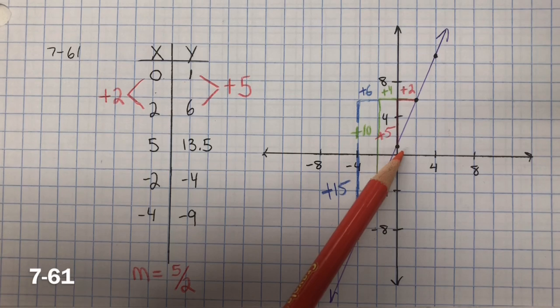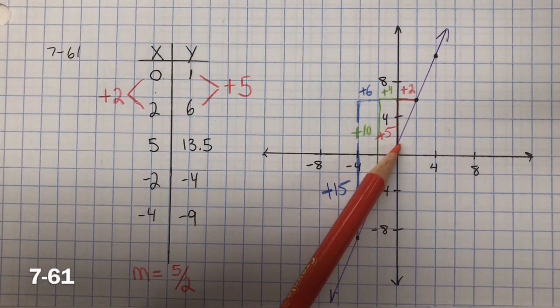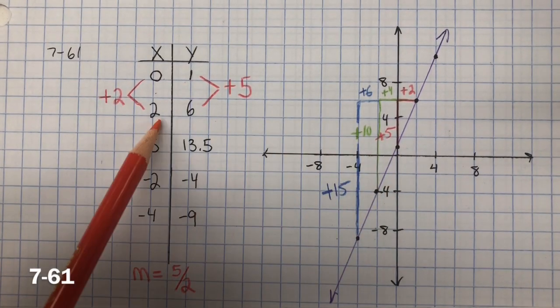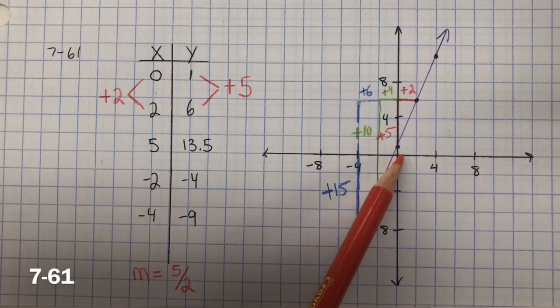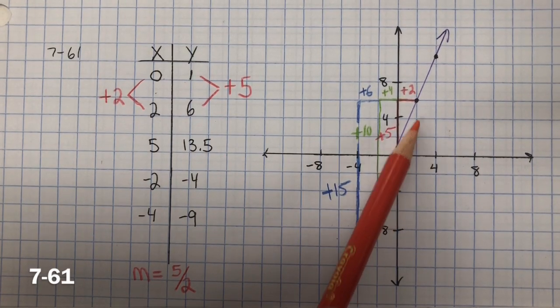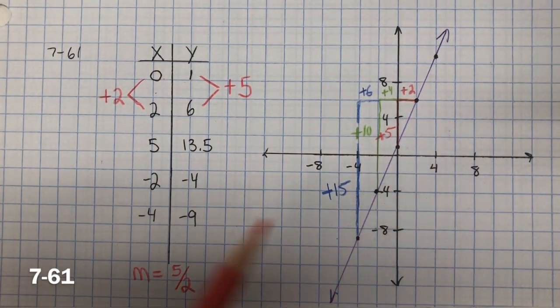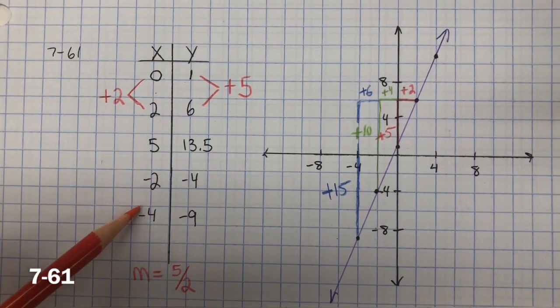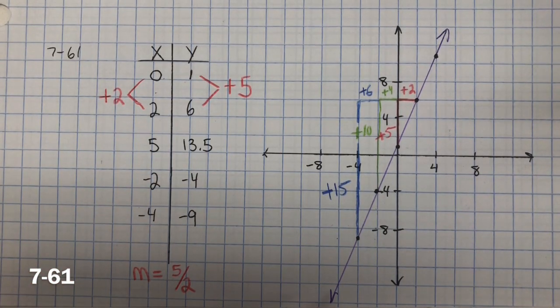0, 1: 0 on the x, 1 on the y. Next one is 2, 6: 2 on the x, 6 on the y. And I would graph the rest of these points. And once I have these points, I connected the points with the line.